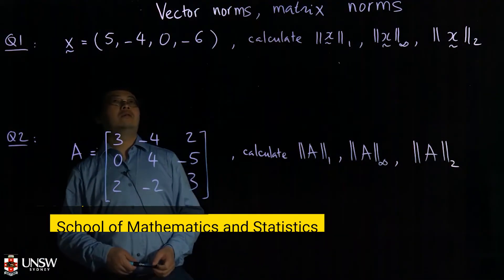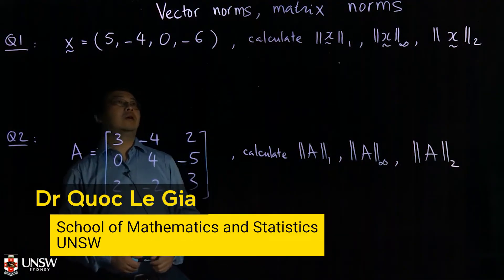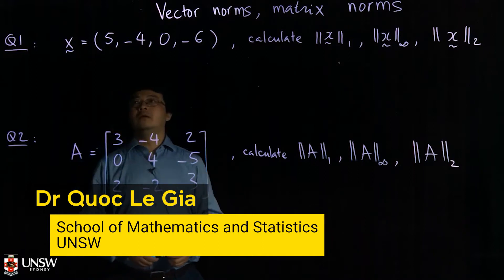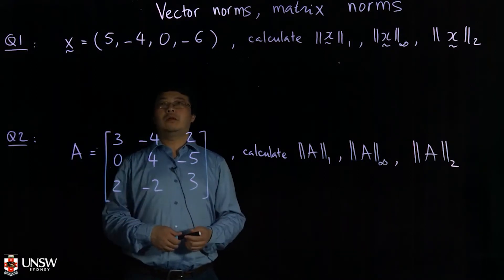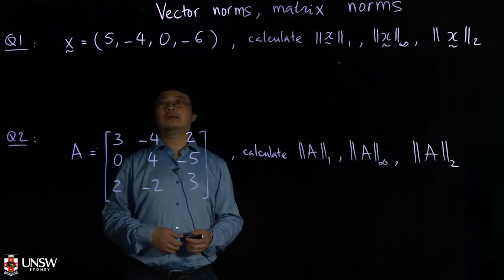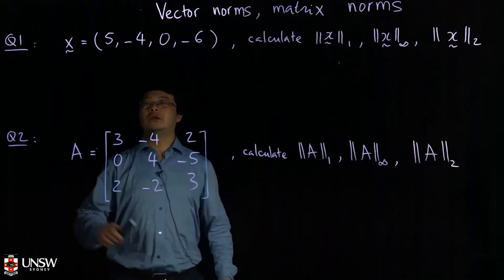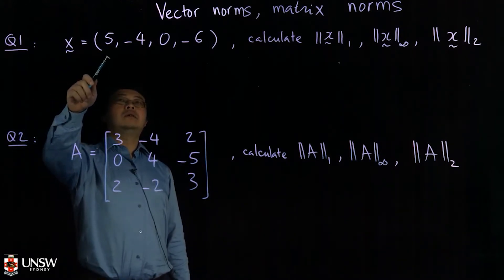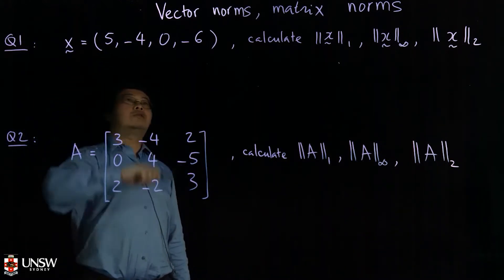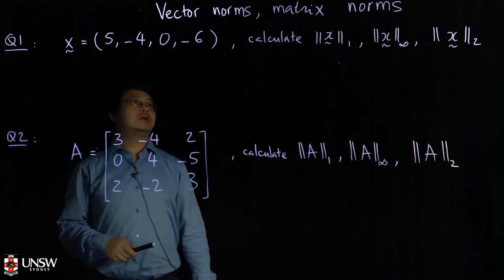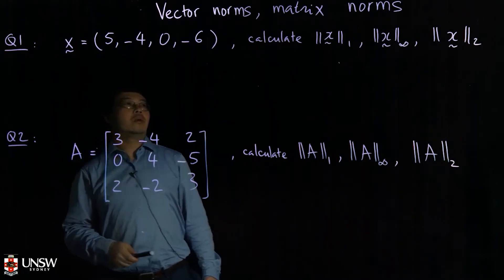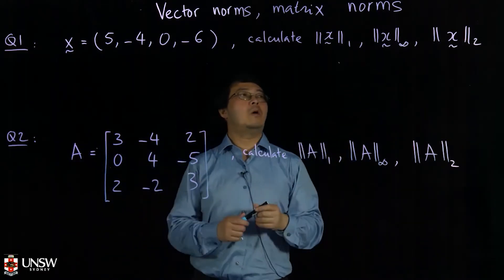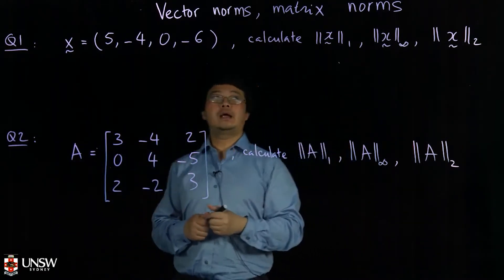Today we're going to talk about vector norms and matrix norms. We start with vector norms first. Suppose you are given a vector x = [5, -4, 0, -6]. What is the one norm? What is the infinity norm? What is the two norm of the vector x?